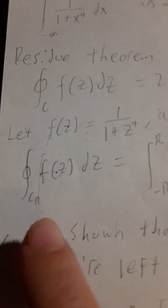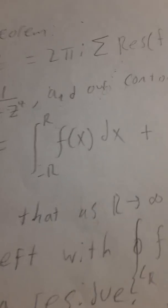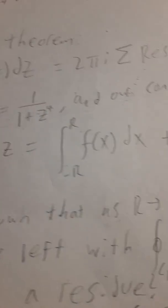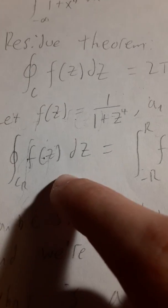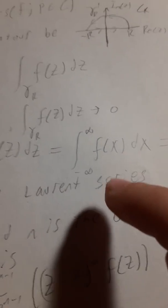Now why did we pick this? It turns out to be very nice. Our contour integral is going to have a real part and a complex part. We can show that the complex part goes towards 0 using some approximation inequality theorems. So as we let r go to infinity, our integral along this contour of our complex function is just the integral from minus infinity to infinity of our real function.